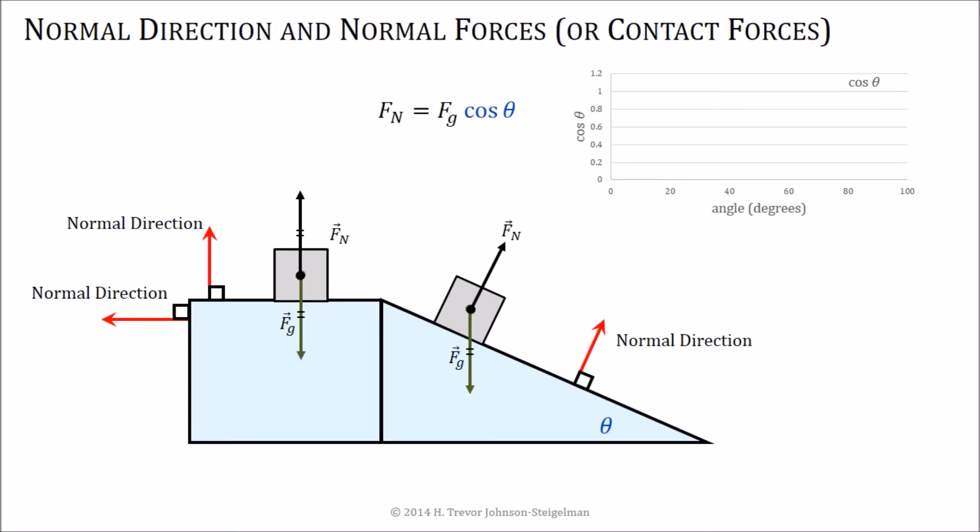Now, if we look at the behavior of this normal force, which is actually the contact force between us and the floor, it is equal to the gravitational force times the cosine of theta, where theta is this angle down here. If we look at the behavior of the cosine function, notice that at zero angle, it starts out strong and then slowly works its way down, actually kind of quickly works its way down to zero at 90 degrees.